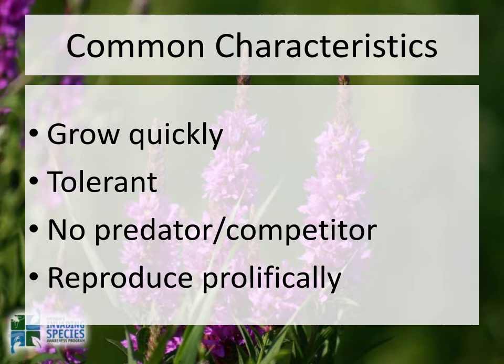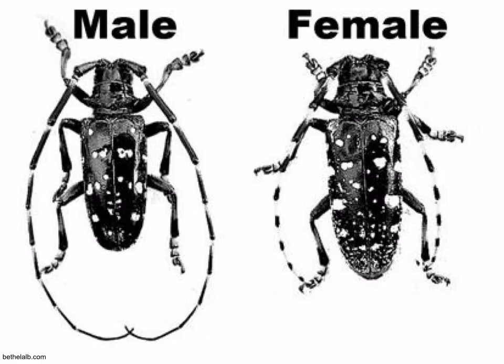Invasive species have common characteristics that allow them to out-compete our native species. They grow quickly, normally starting growth earlier in the spring and continuing later into the fall than our native species. They are able to tolerate a wide variety of conditions such as soil, moisture level, and sun. They have no natural predator or competitor like they would in their native environment, and they reproduce prolifically by either having a great amount of seeds or being able to spread effectively and frequently.